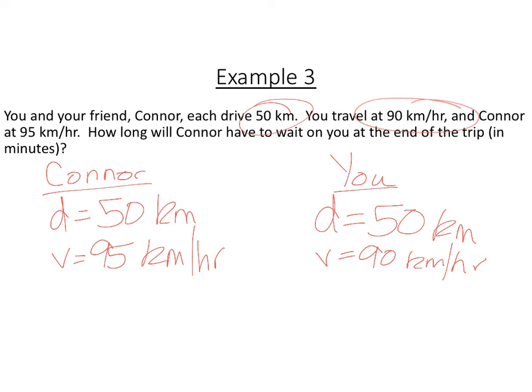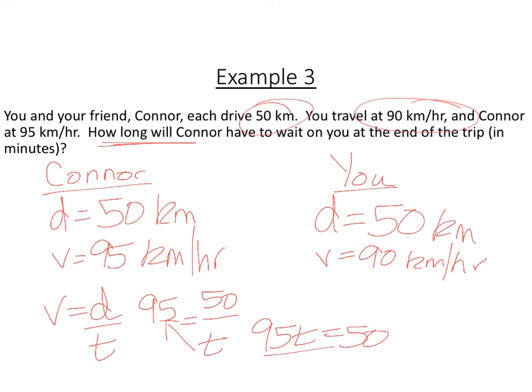Okay, so basically we need to know how long that indicates time, right? So if we look at our V equal D over T equation for Connor, we've got 95 equals T, and then you got your 50 on top. To get T by itself, first you got to get it off the bottom, so cross multiply. So we got 95 T equals 50 divided by 95, so now T is equal to 50 divided by 95, which means that Connor's time is 0.53 seconds, okay? So this is Connor.